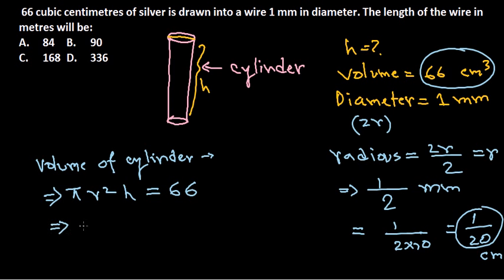Right, so here the value of π, we all know, is simply 22/7. And r² here - remember r is 1/20, so let's put 1/20 and 1/20 because square means r into r. So r into r is 1/20 into 1/20 into h equals to 66.